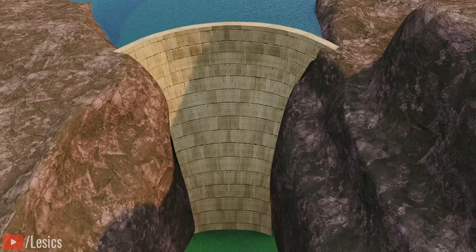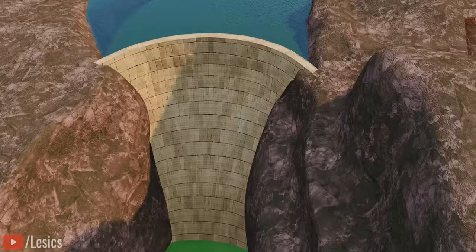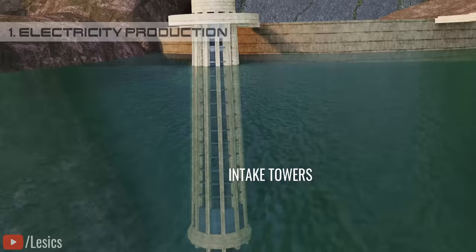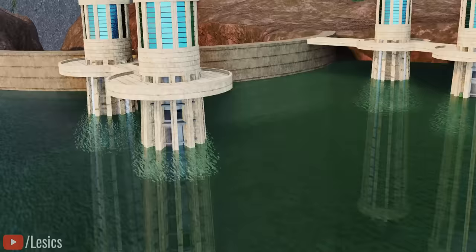Now, let's explore the details of Hoover Dam's biggest application, electricity production. You might have observed four huge towers inside the dam's water body. These are intake towers. Several gates along the height of these towers regulate water flow rate. The intake tower is then connected to these 500-foot-long penstocks that carry water to the turbines.